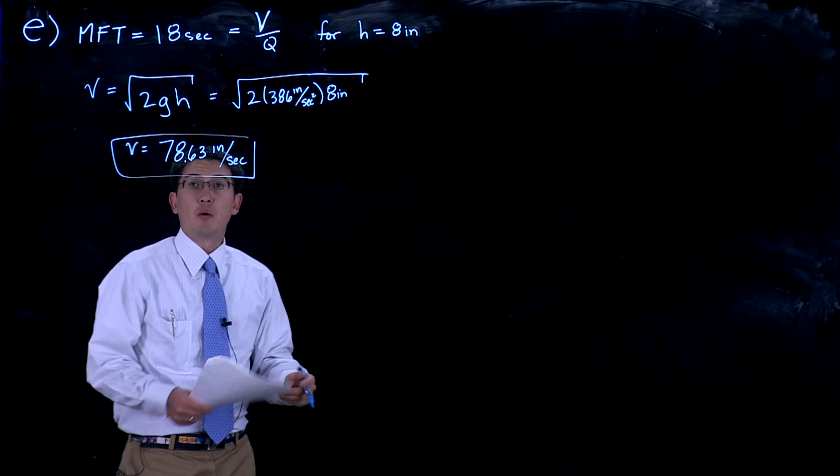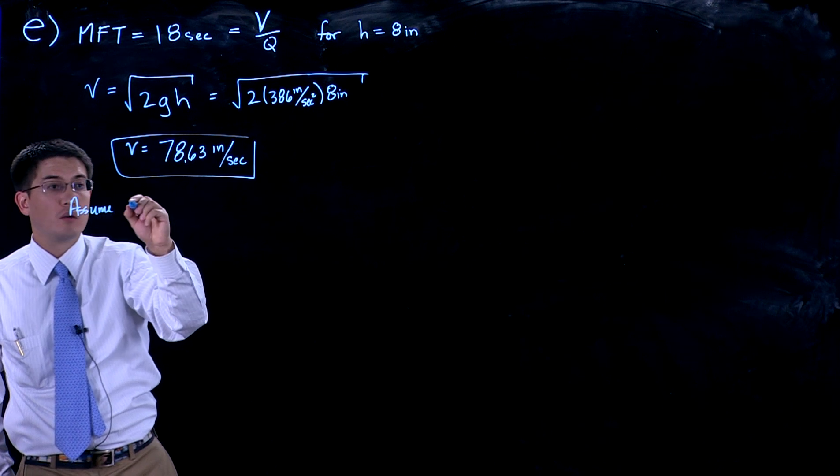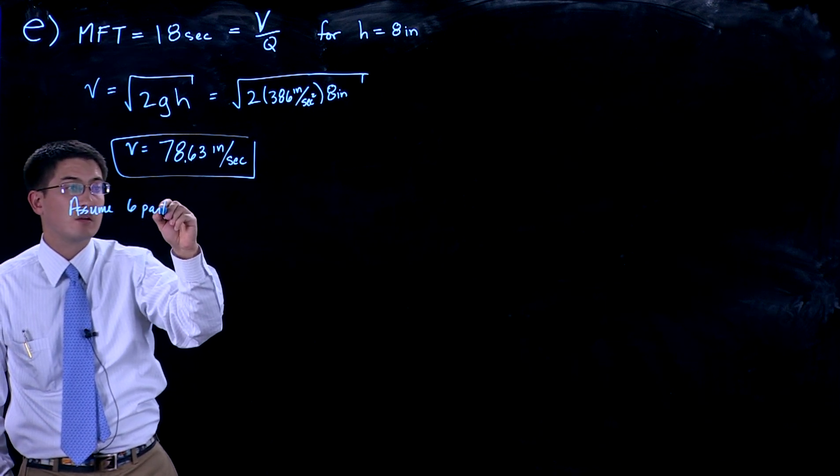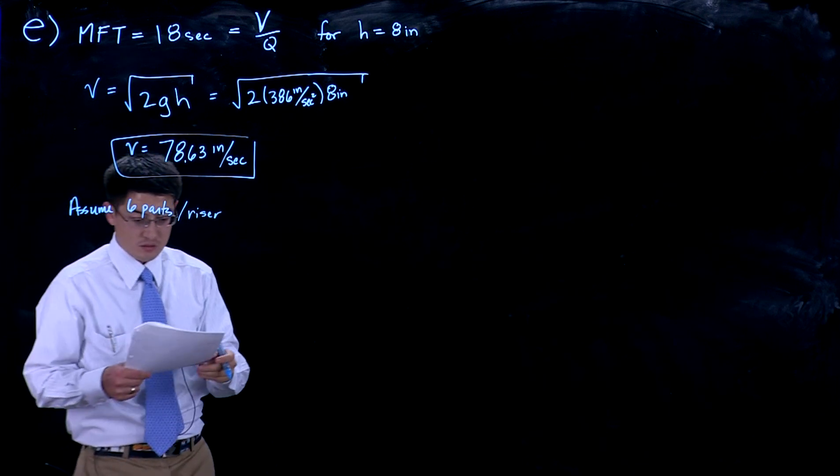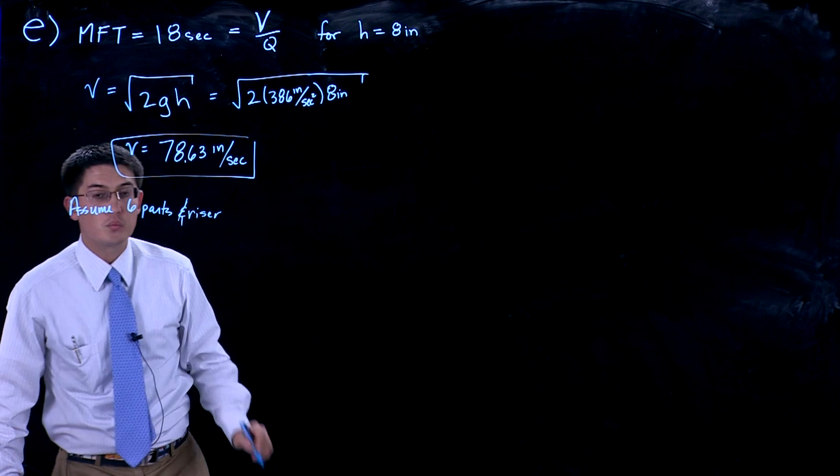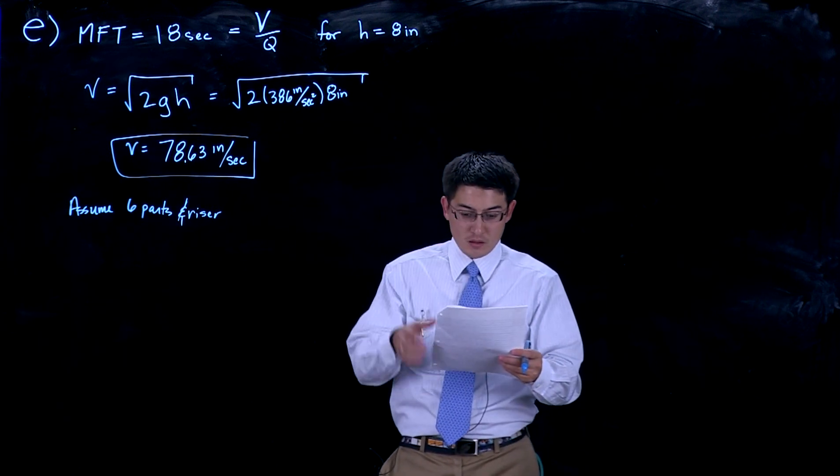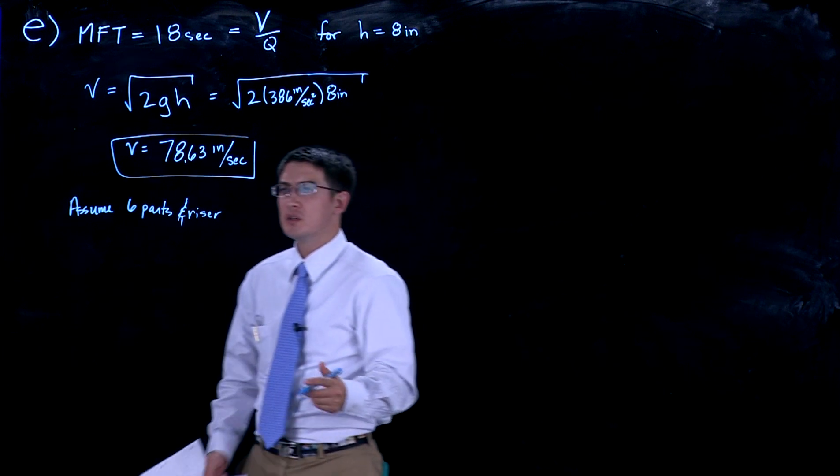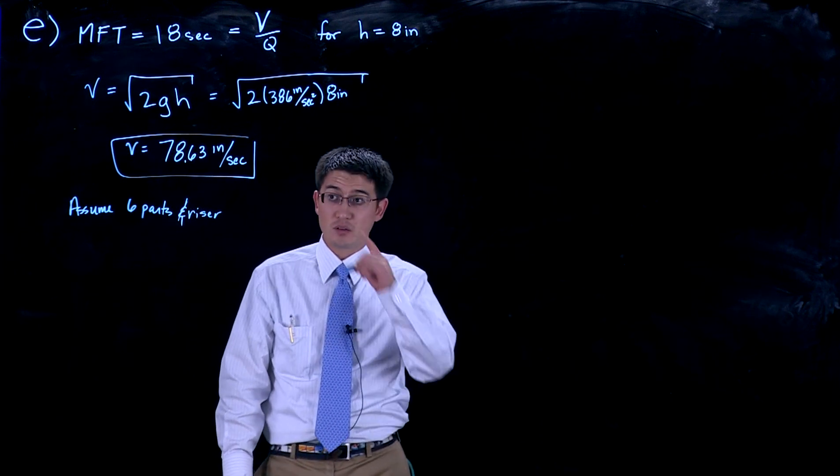We're going to assume six parts per riser—sorry, six parts and risers. We're making six parts and each part has a riser, so we have a total volume that we're going to fill: six parts and six risers that we have to fill up.